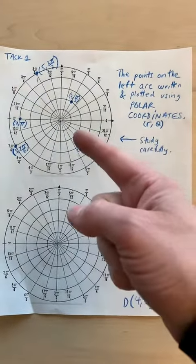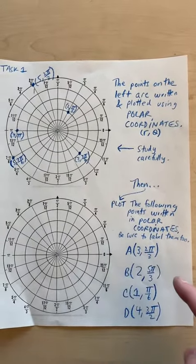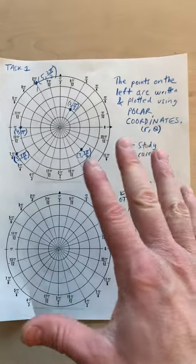So I want the students to study, see what they notice, and then see if they can plot these four. Notice R and theta are both positive here. It's the easiest version.